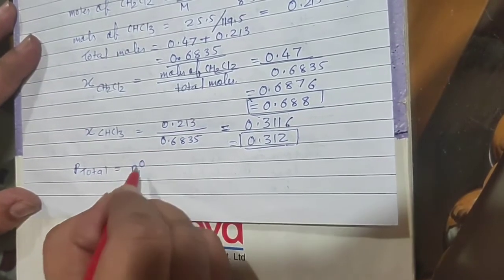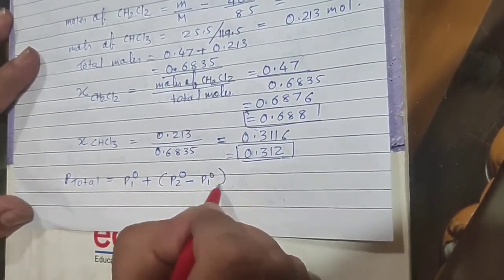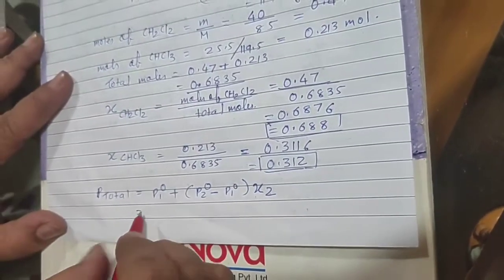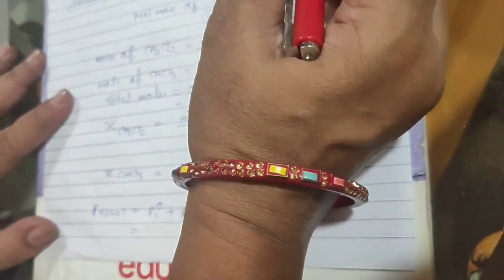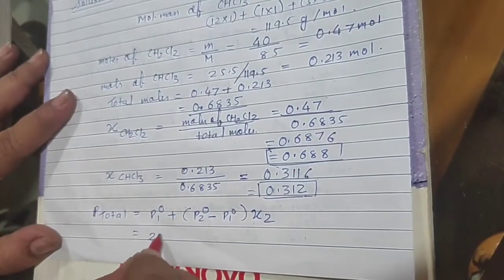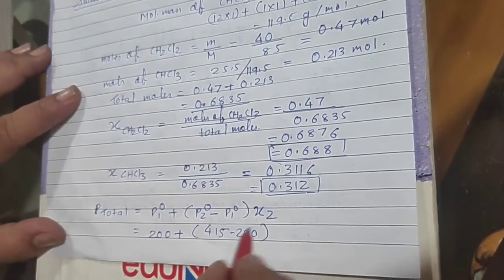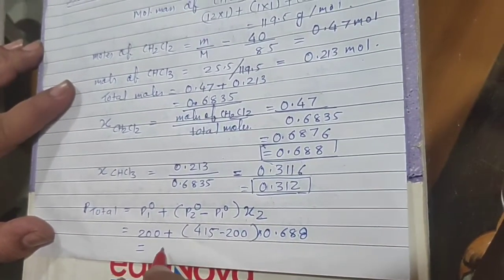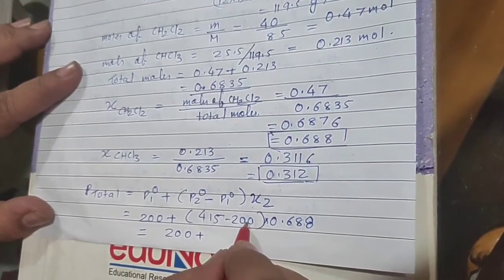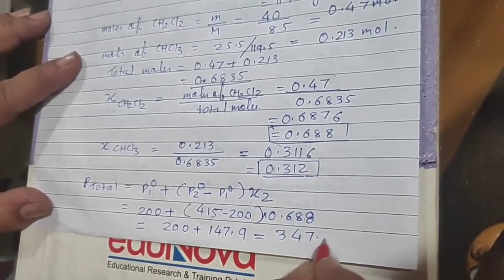Now we calculate P_total using the formula: P_total = P1° + (P2° - P1°) into X2 = 200 + (415 - 200) × 0.688 = 200 + 147.9 = 347.9 mmHg.